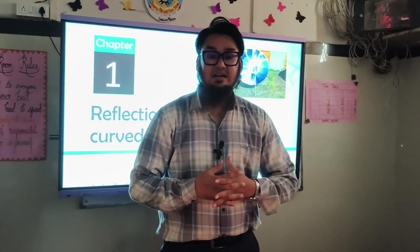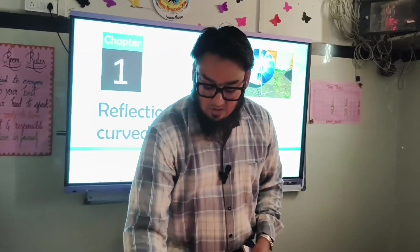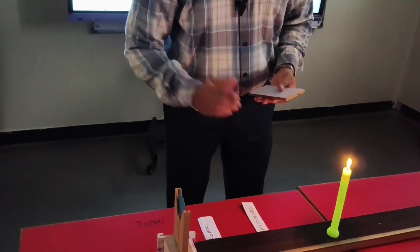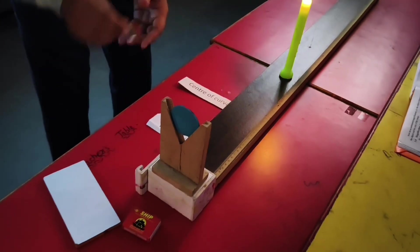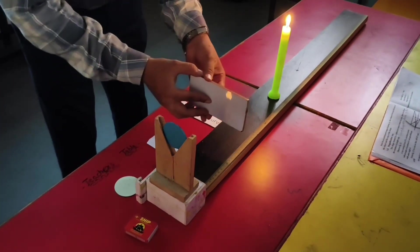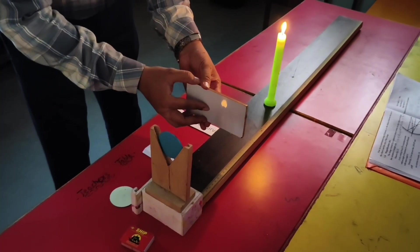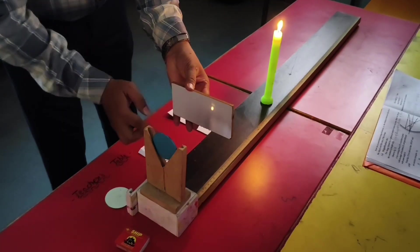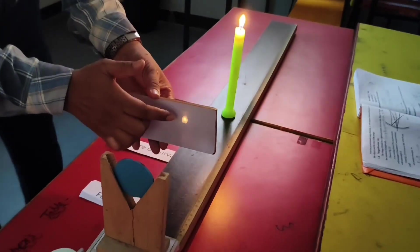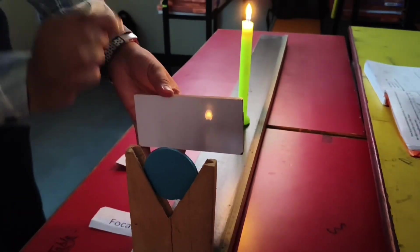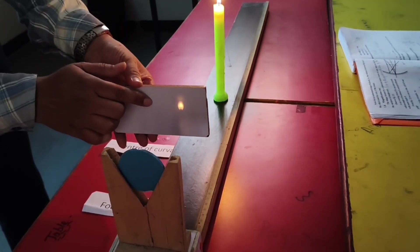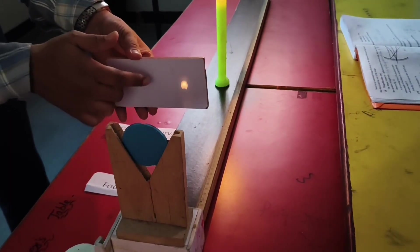Now we verify the ray diagram practically using a concave mirror, screen, and candle. If the object is placed beyond center of curvature, the image will be formed between F and C. You can observe that a sharp image is forming between F and C. The characteristics: it is diminished, inverted, and real — we call it real because we are catching it on a screen.